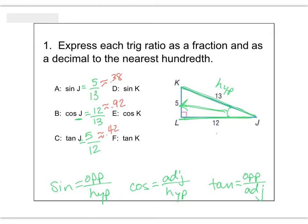Take a second and try to do sine K, cosine K, and tangent K. Go ahead and pause the video and come back. If you did it correctly, the sine of K should be 12 over 13, which is 0.92. Cosine K should be 5 over 13, which is 0.38. And tangent K should be 12 over 5, which is 2.4.